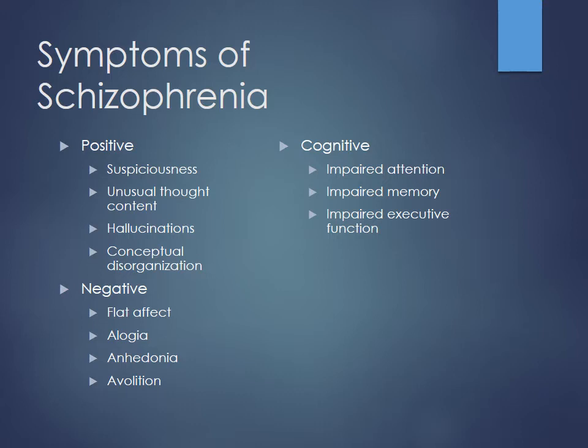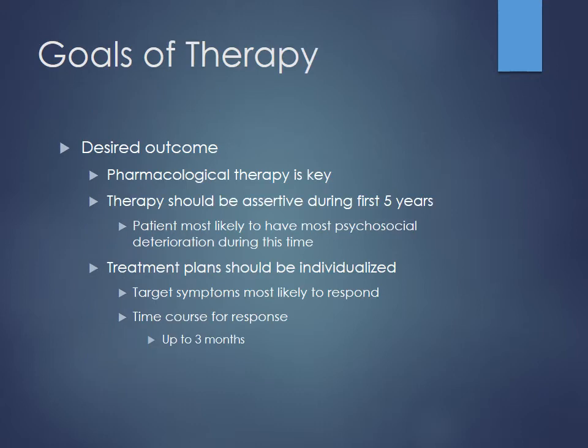Pharmacologic therapy is key; there are non-pharmacologic components like counseling as well. Therapy should be assertive during the first five years — that's when patients have the most psychosocial deterioration. Schizophrenia usually manifests around ages 18 to 20, often when patients are going off to college. Getting treatment started early can help slow progression. Treatment plans must be individualized based on presenting symptoms.